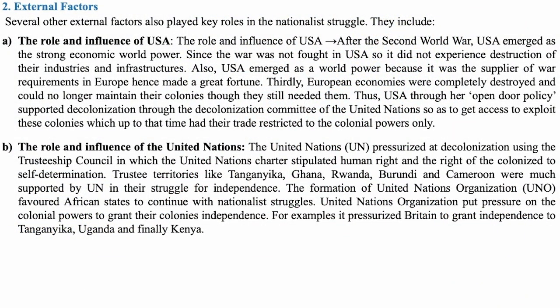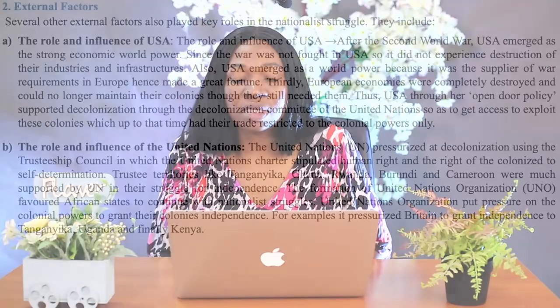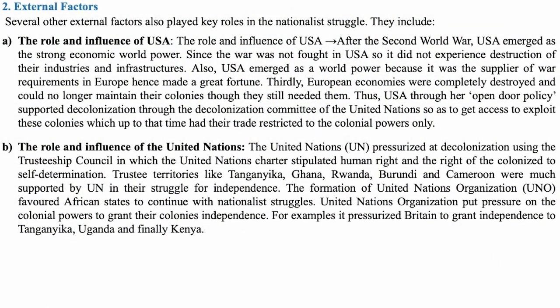The second external factor is the role and influence of the United Nations. The United Nations put pressure on colonial masters to grant freedom to their colonial territories through the establishment of the Trusteeship Council. Countries regarded as trustee territories — including Ghana, Rwanda, Burundi, Cameroon, and Tanganyika — received support from the United Nations. The UN Trusteeship Council also pressured Britain to grant political freedom to Uganda, Kenya, and Tanganyika.